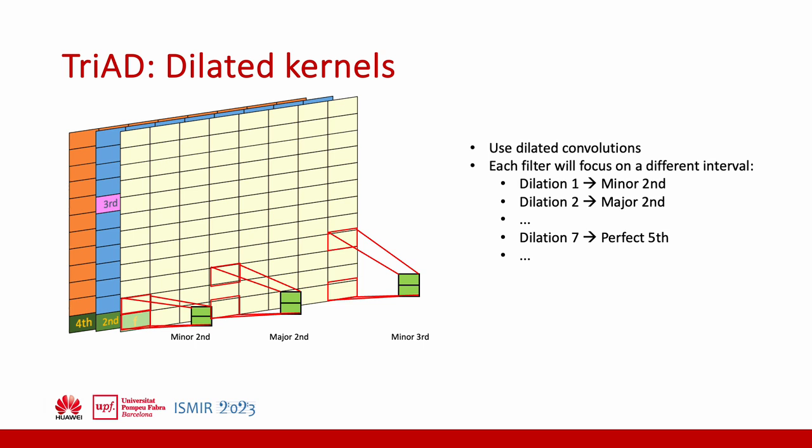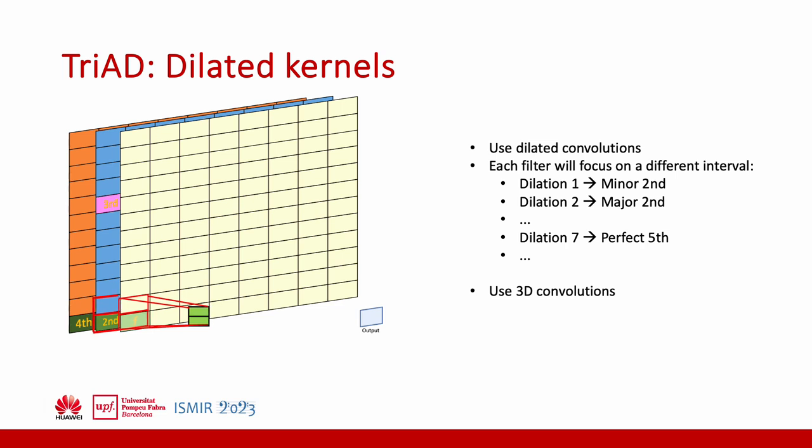And to capture harmonics related to other intervals, we just dilate the kernels at the pitch class dimension. Contrastively to previous works, our proposal uses 3D convolutions, as the kernel now spans three dimensions: time, octave, and pitch class. The kernels for each interval are applied in parallel and then later aggregated.